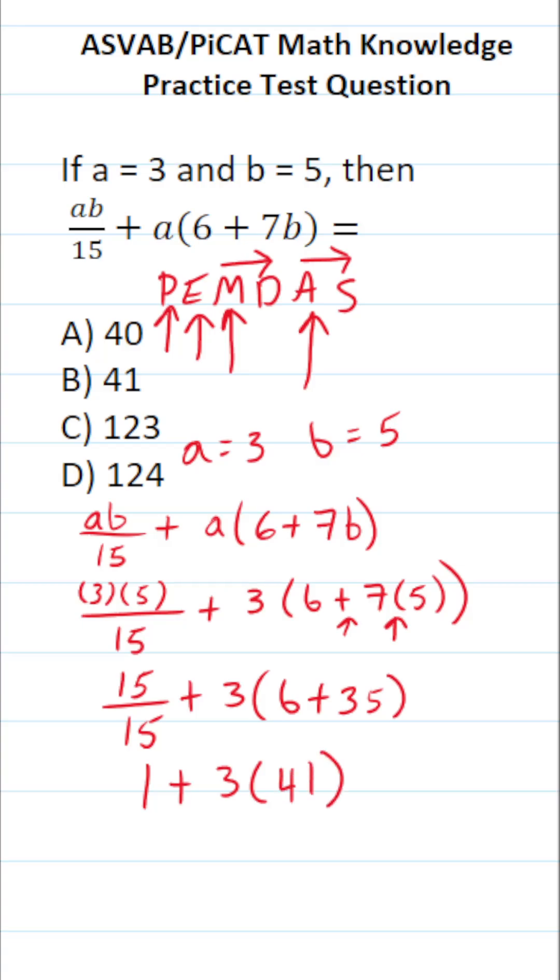Now we just have two operations left. We have addition here and multiplication here. As I mentioned, you do multiplication before addition according to the order of operations. So I'm going to do 41 times 3 off to the side. 1 times 3 is 3. 4 times 3 is 12. So this is 1 plus 123.